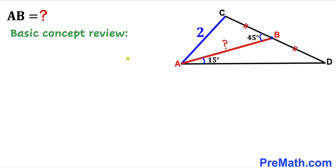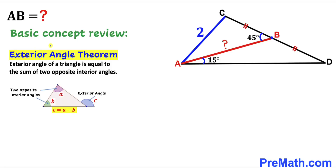Before we proceed any further, let me go over the basic concepts. Let's recall the exterior angle theorem. According to this theorem, the exterior angle of a triangle is equal to the sum of the two opposite interior angles. As you can see in this diagram, angle C is our exterior angle and that is going to be equal to the sum of these two opposite interior angles A plus B.